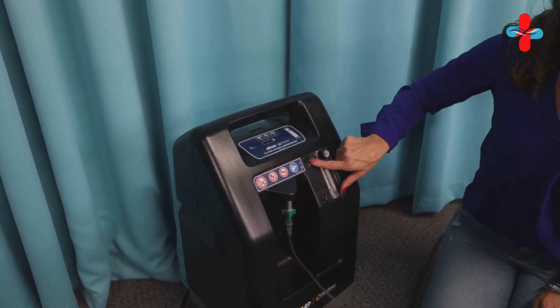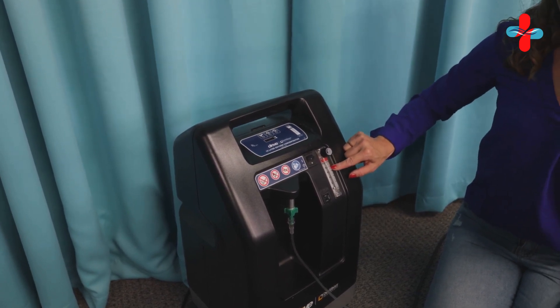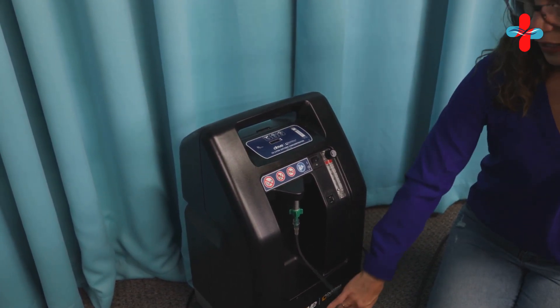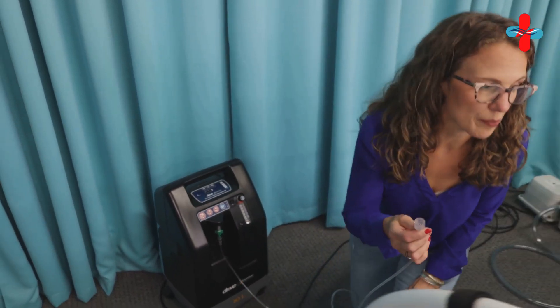This is going to be your power button. You're going to turn it on right here and just run it between 8 and 9 liters per minute. Then we're going to run this hose directly to the hyperbaric chamber.